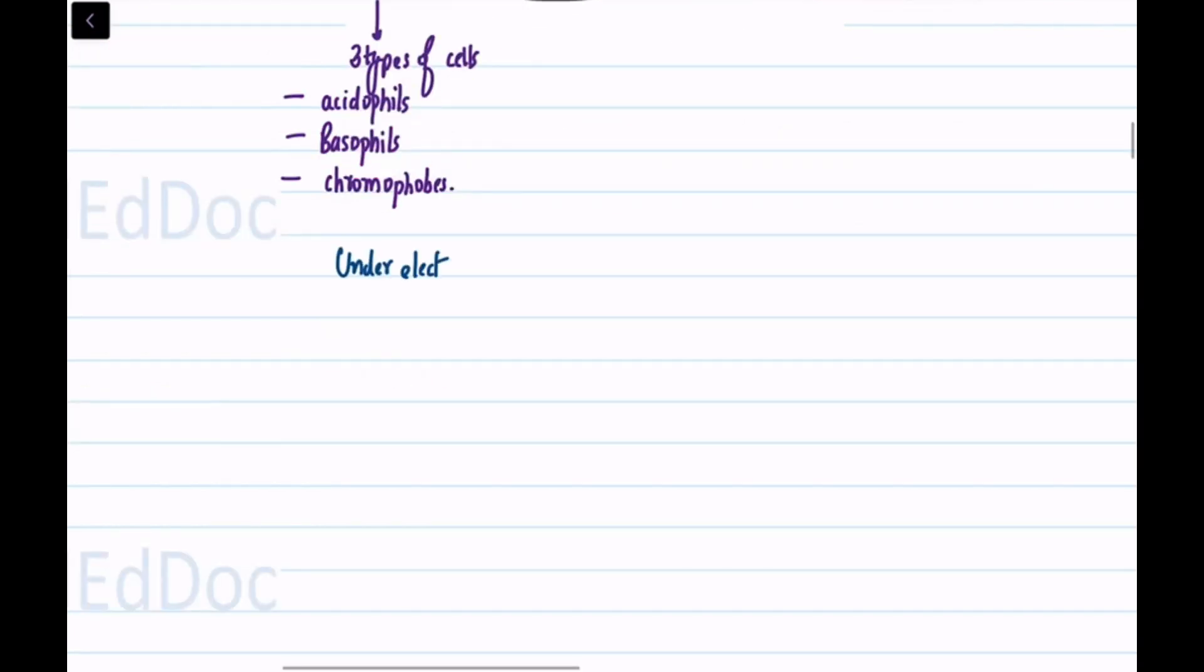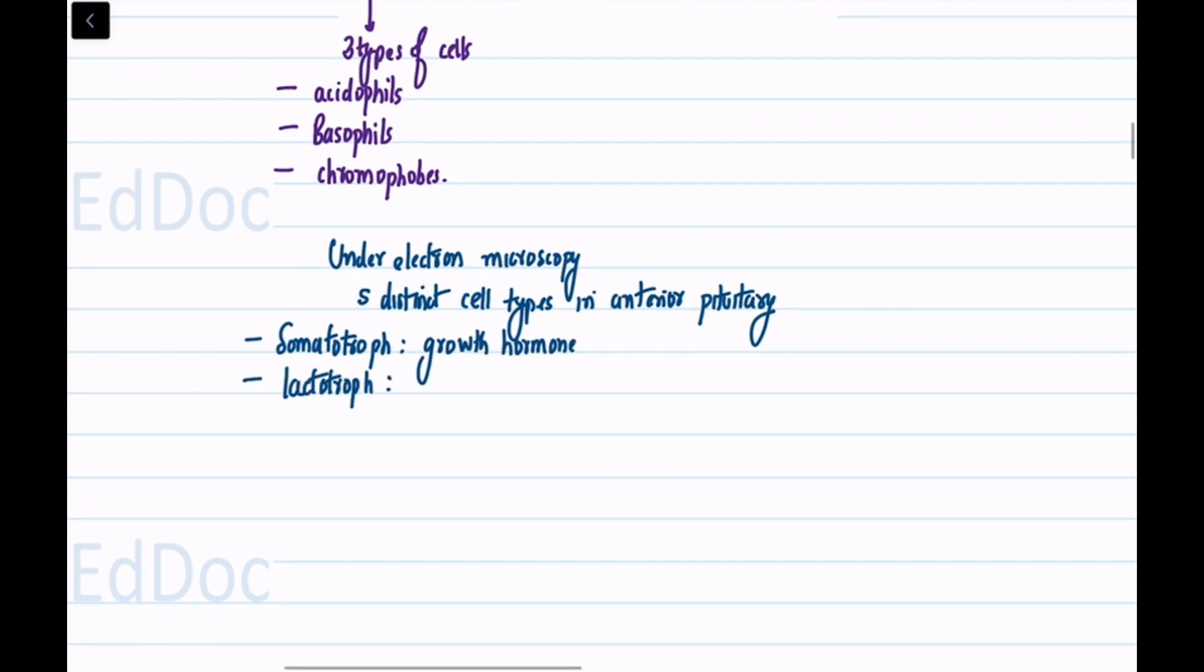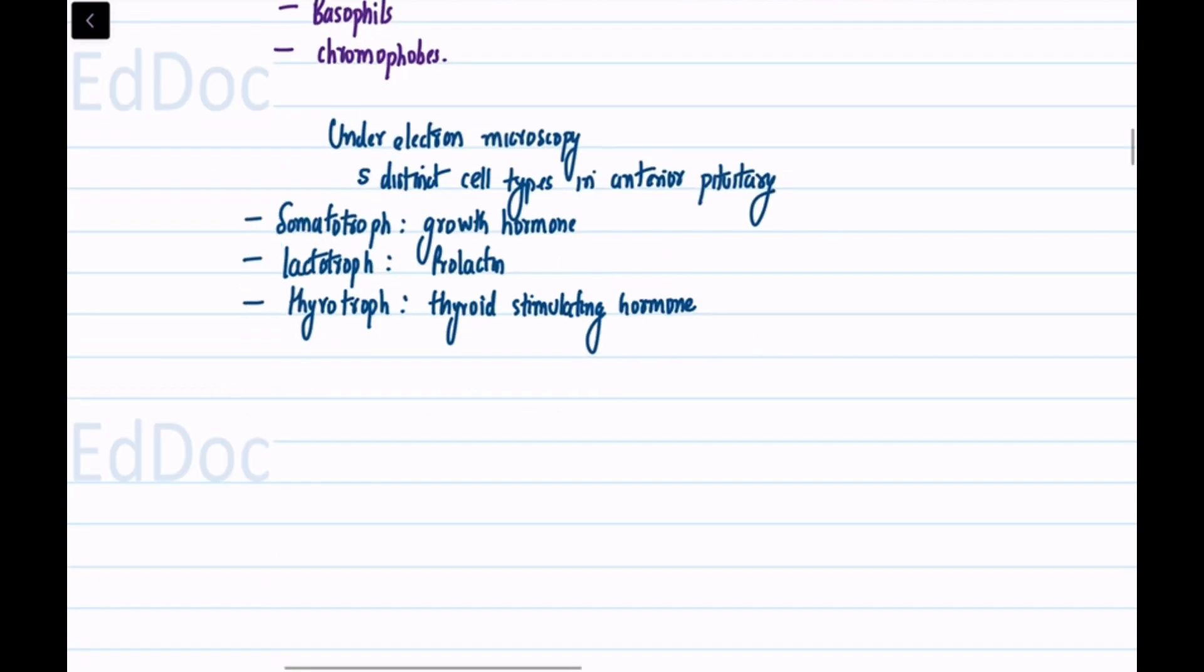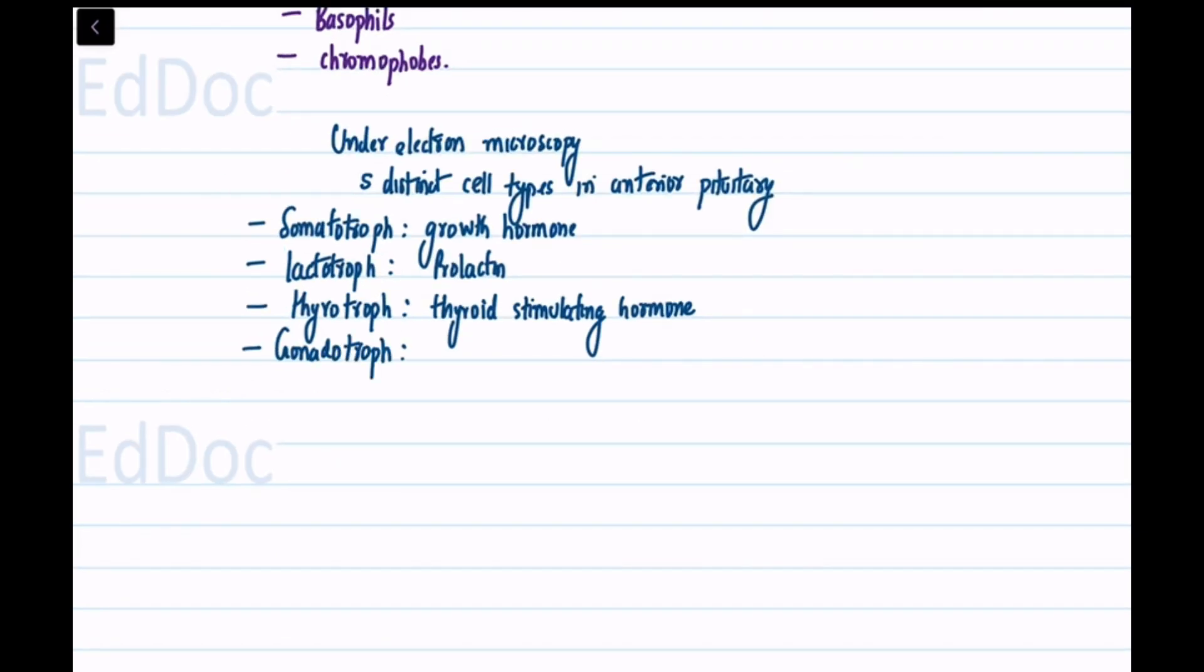Under electron microscopy, it becomes possible to identify five distinct cell types in the anterior pituitary, each secreting a specific hormone. These cell types include somatotrophs that produce growth hormone (GH), lactotrophs that secrete prolactin (PRL), thyrotrophs responsible for thyroid-stimulating hormone (TSH) secretion, gonadotrophs that produce follicle-stimulating hormone (FSH) and luteinizing hormone (LH), and corticotrophs that secrete adrenocorticotropic hormone (ACTH).